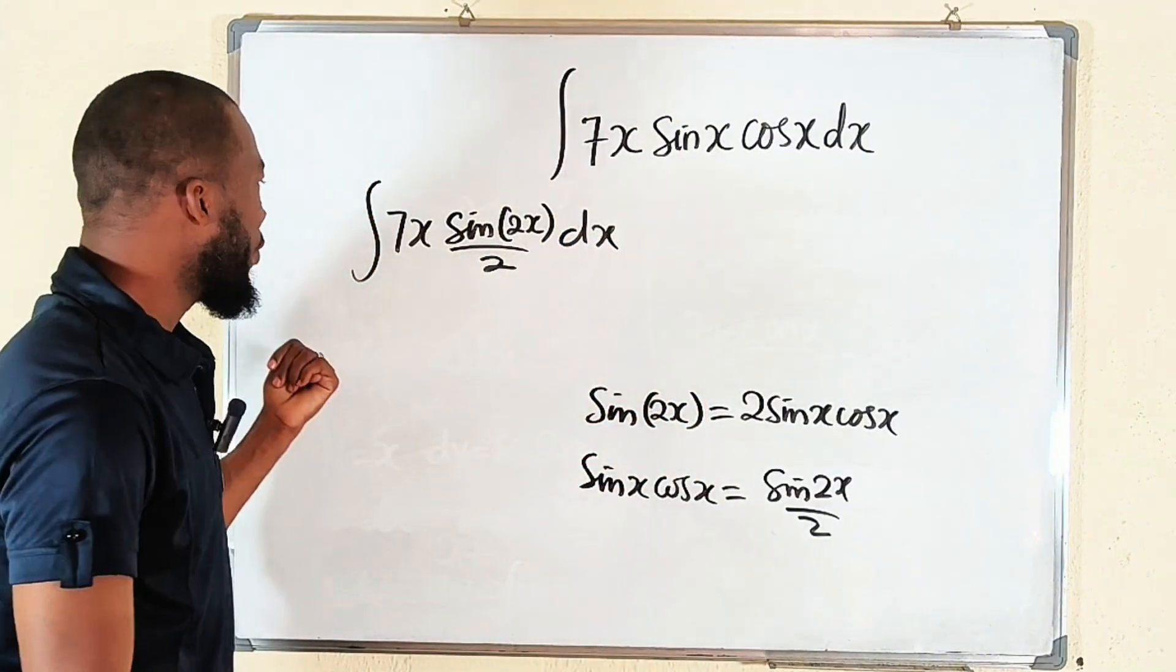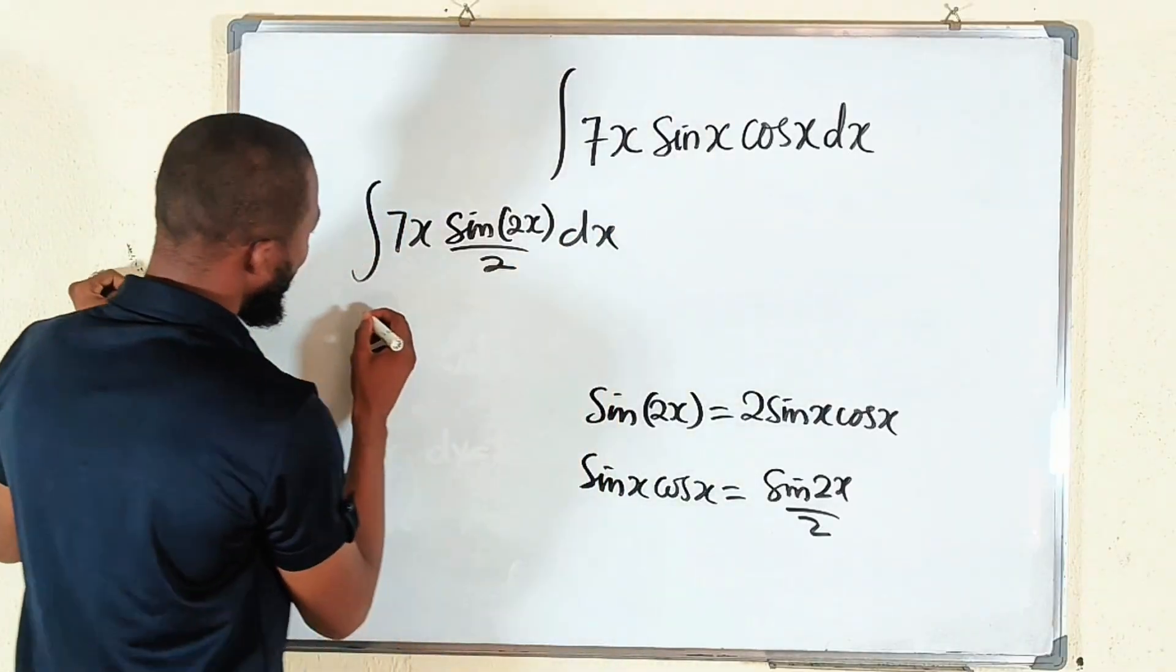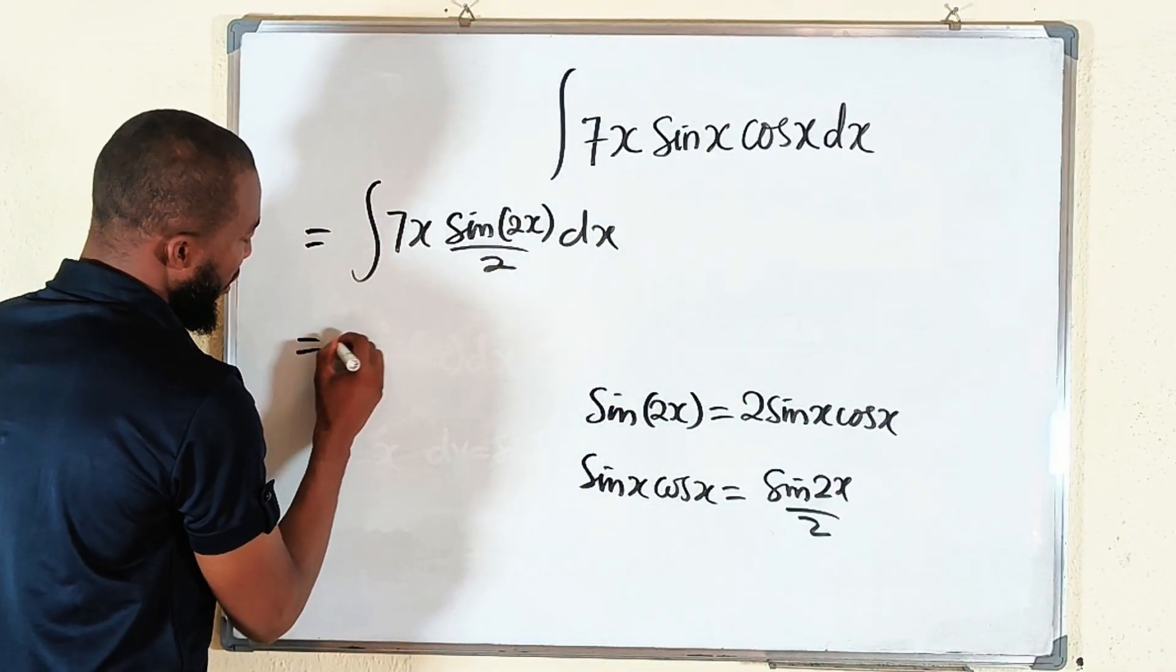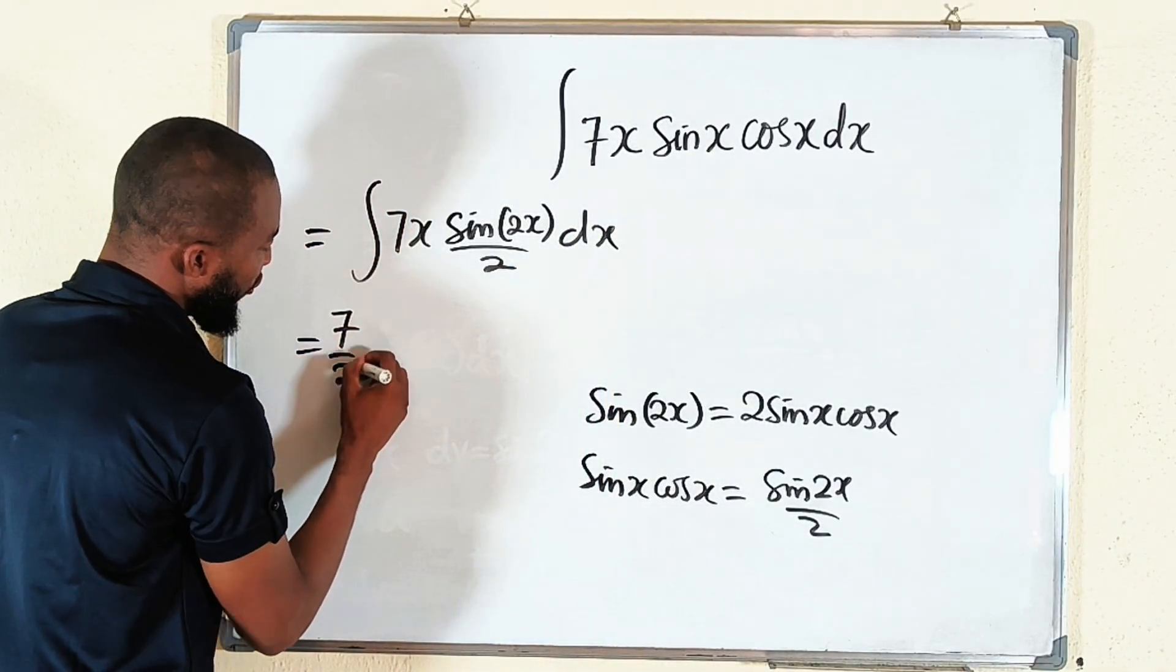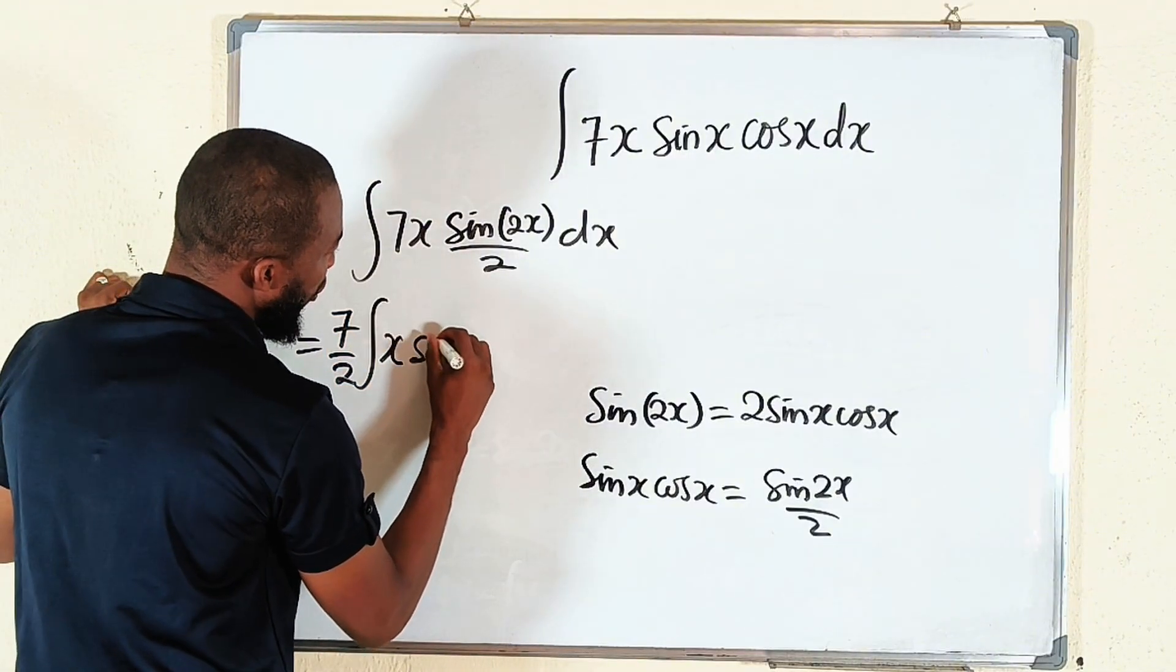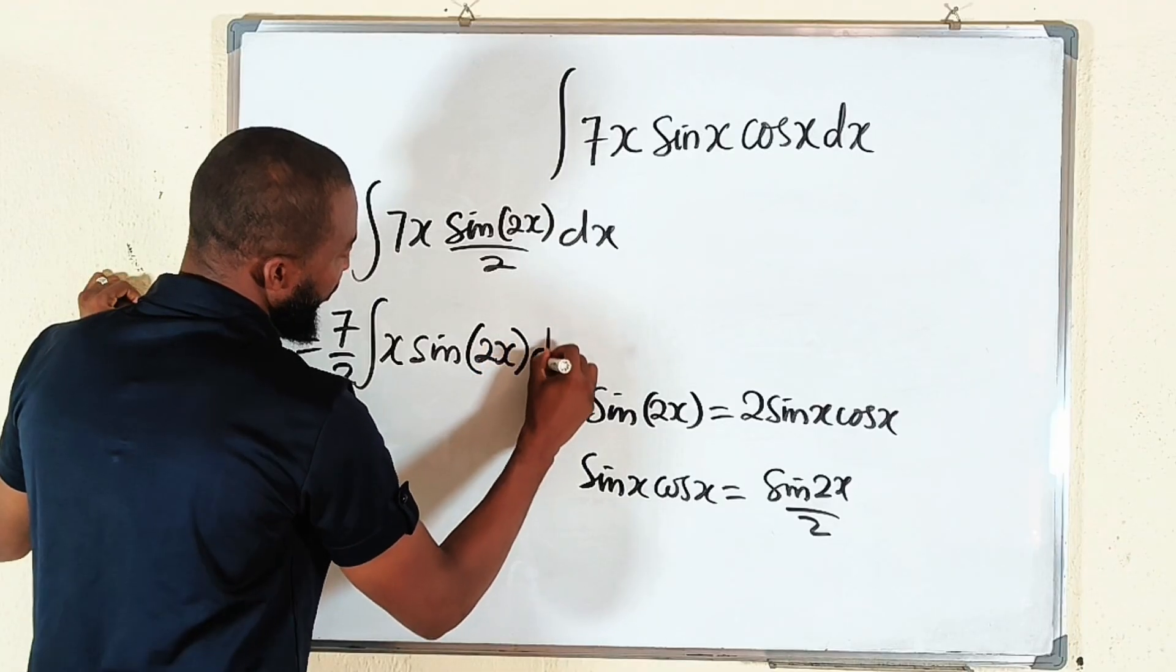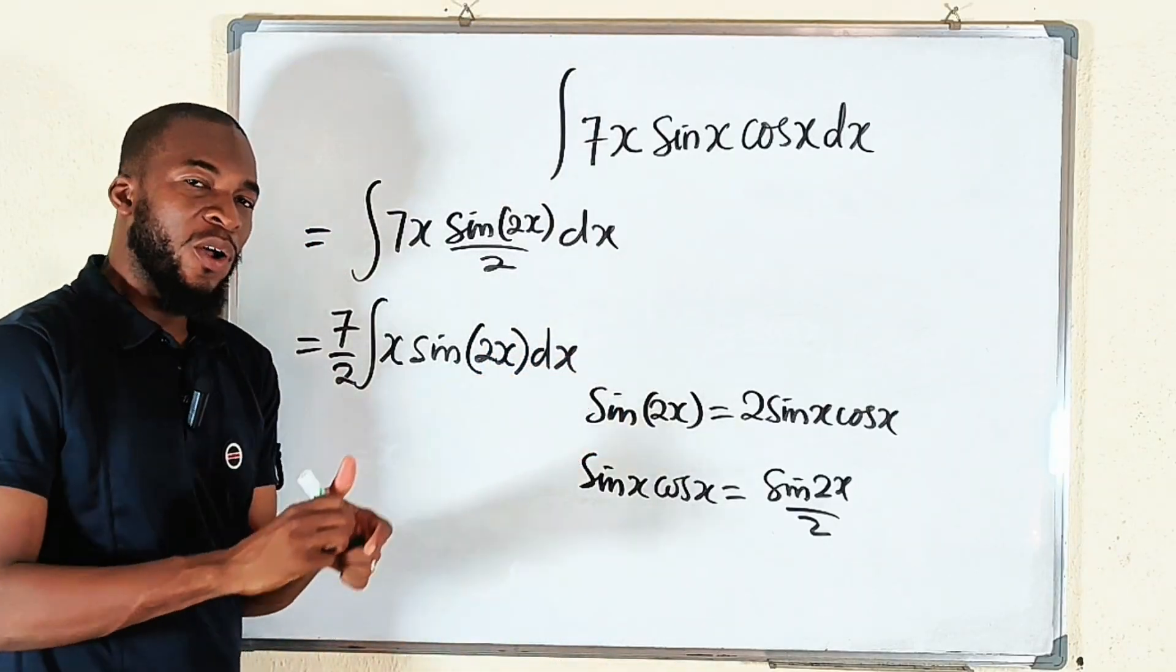So let us factor out the constant. We have 7 divided by 2. Let me bring it outside. This is 7 divided by 2 times the integral of just x sin of 2x with respect to x.